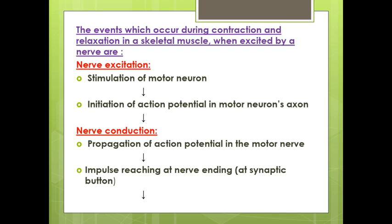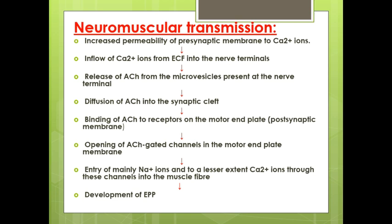In nerve conduction, the action potential propagates along the motor nerve until the impulse reaches the nerve ending at the synaptic button. Then we have neuromuscular transmission.